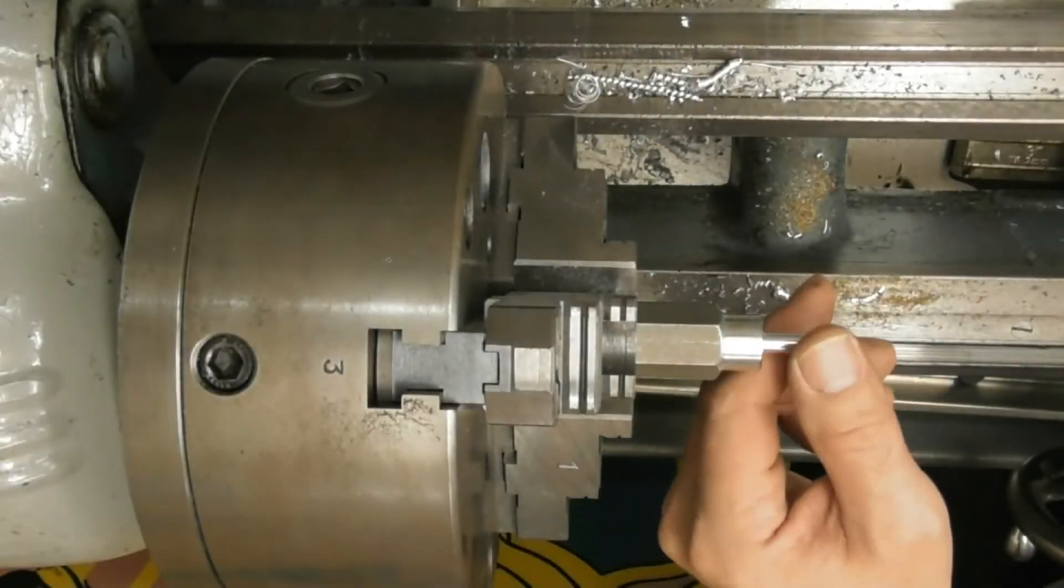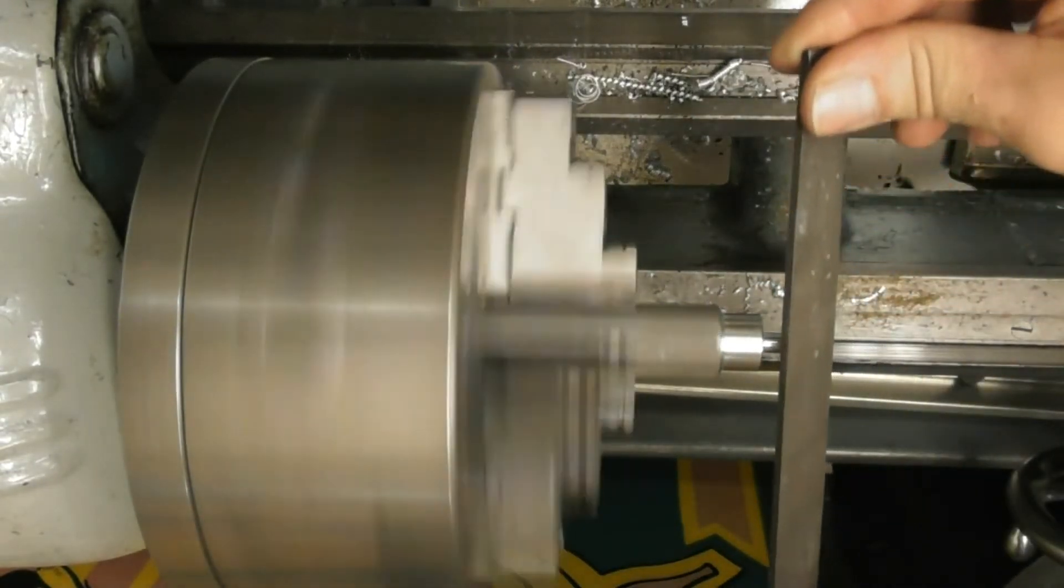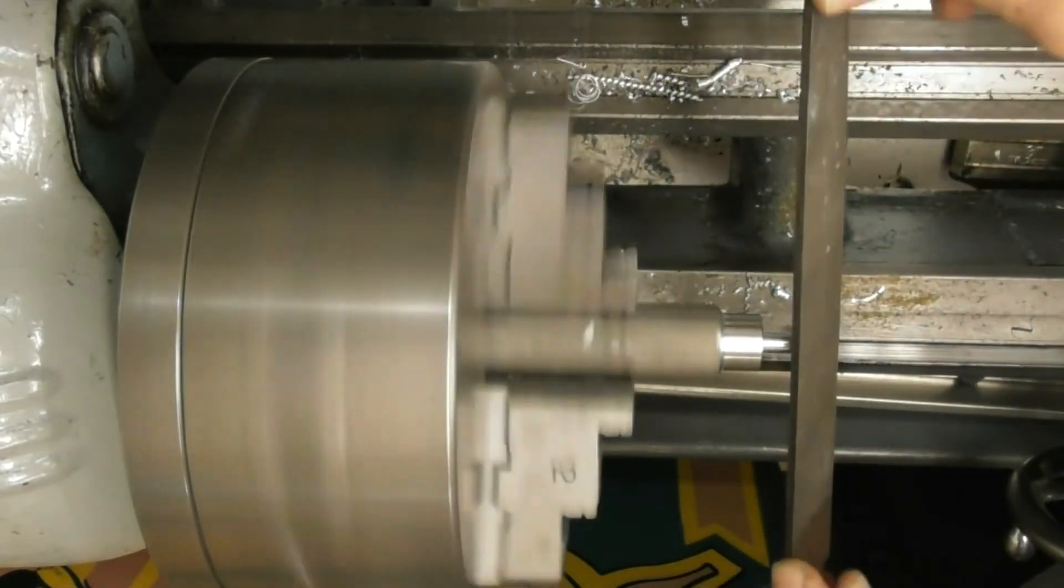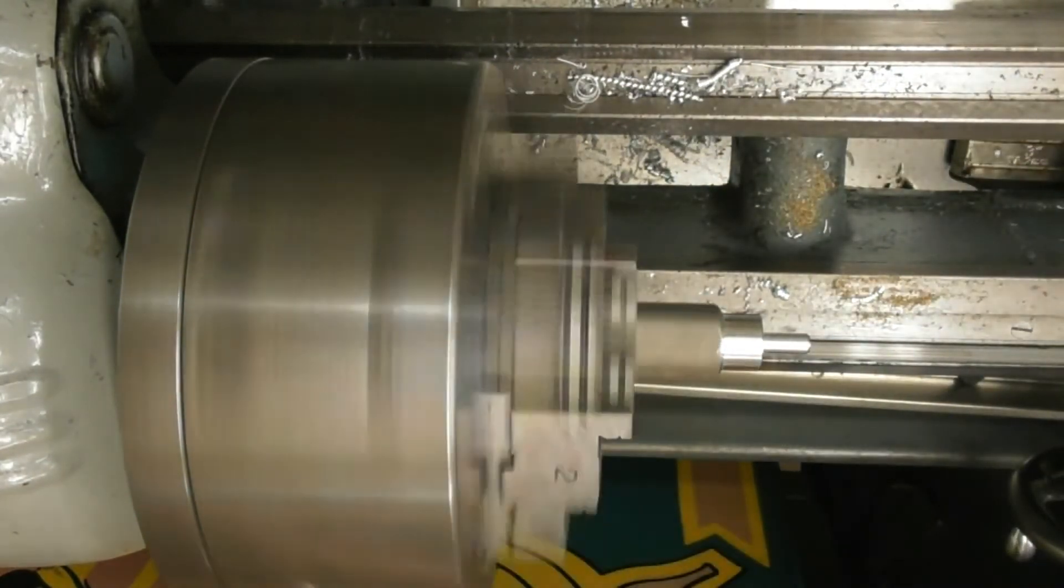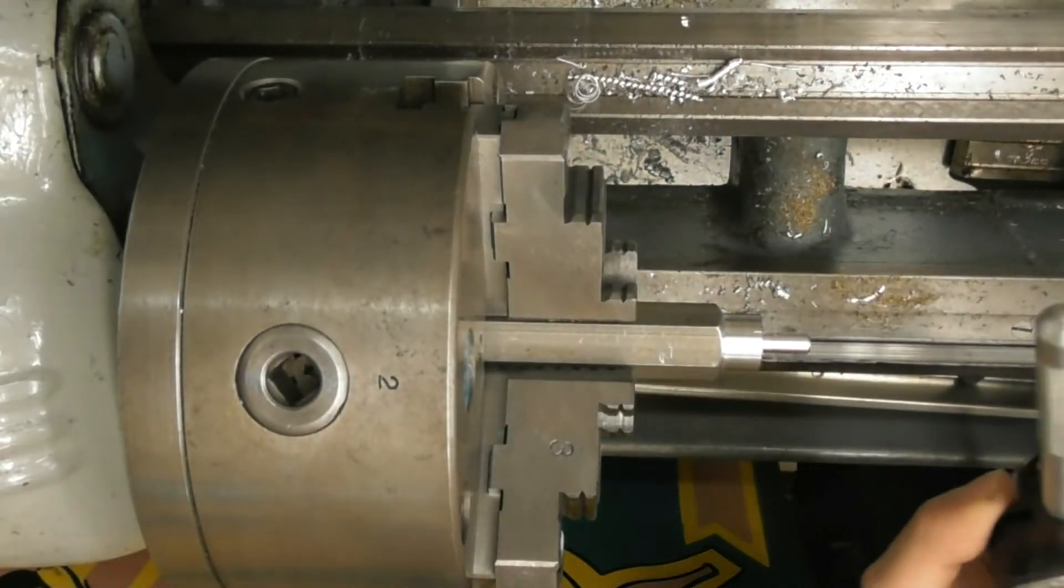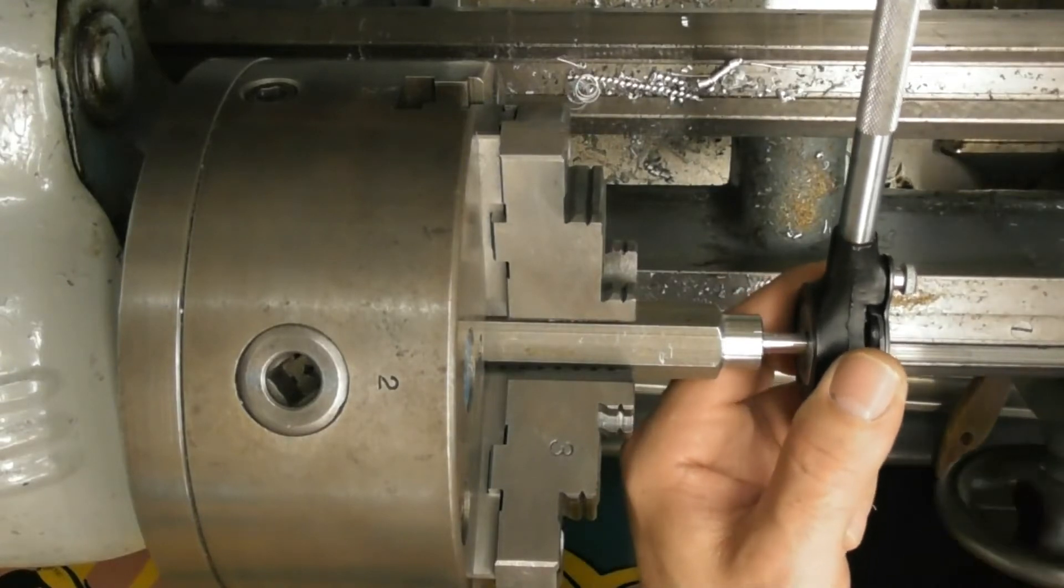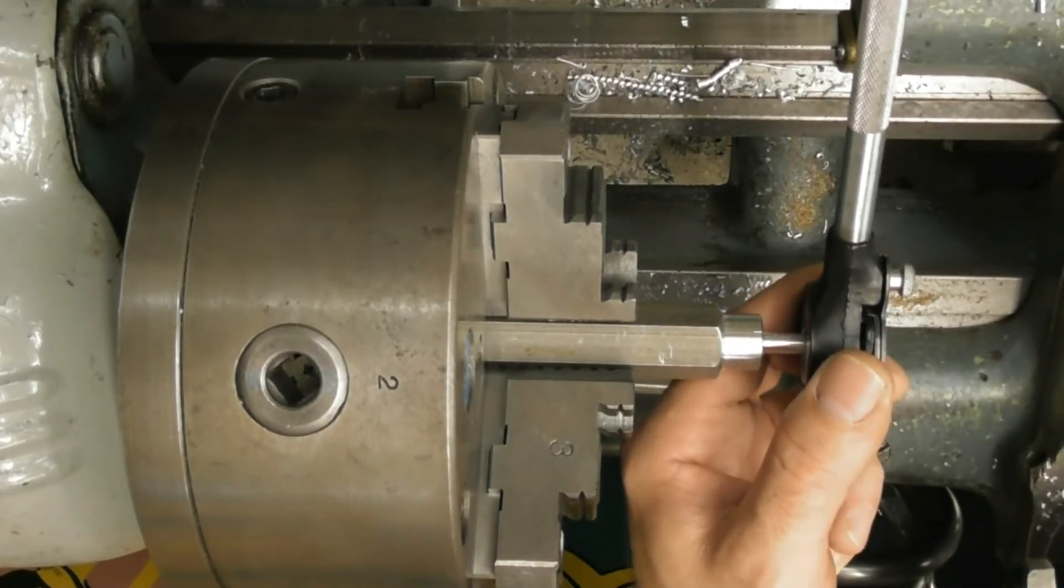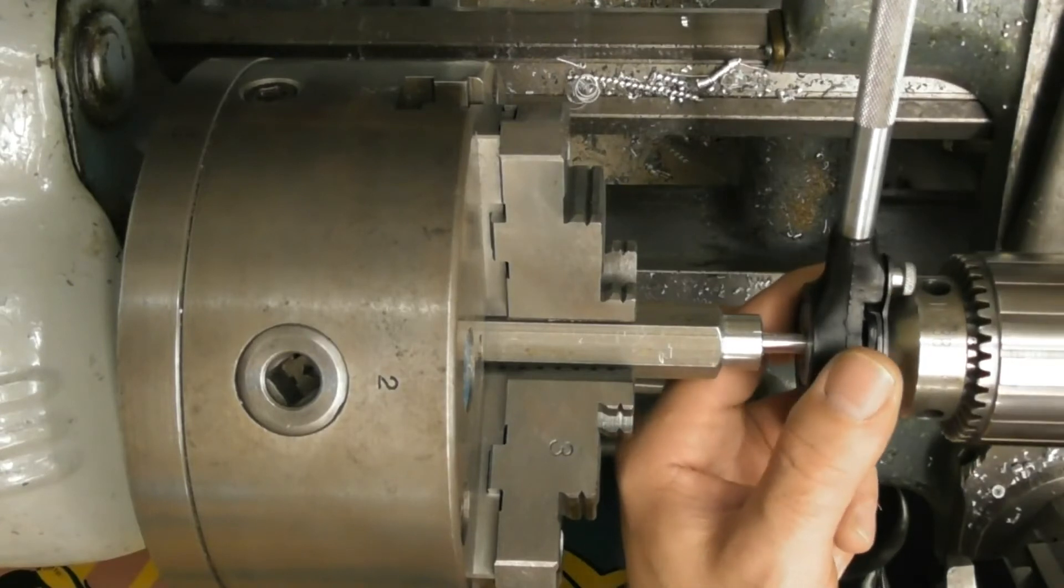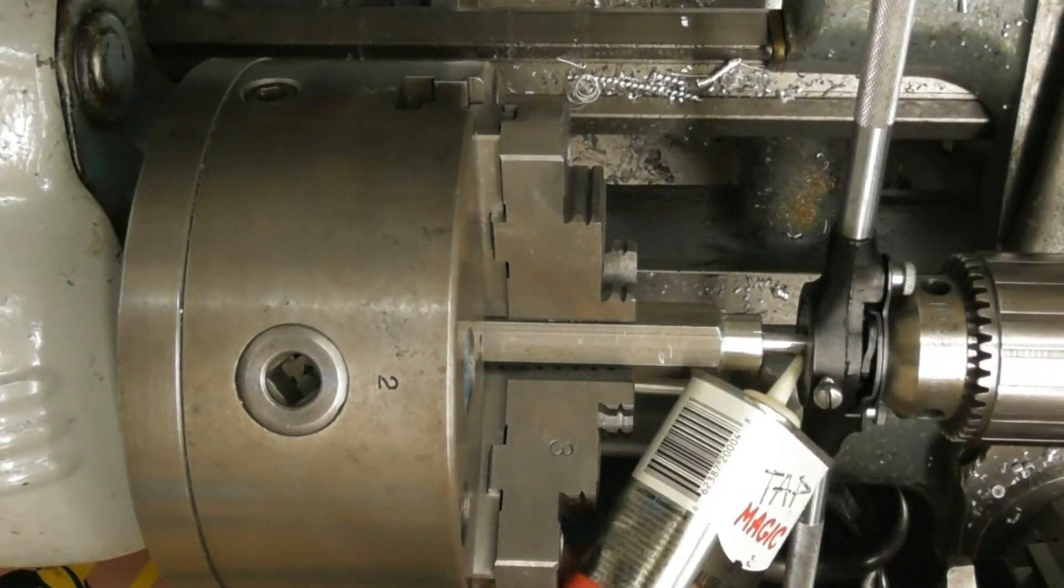All right, well everything is looking good. I'm going to take a file and chamfer this edge to give myself a lead angle for threading this. Looking good, looking good. I've got my quarter twenty die set up here. I'm going to bring my tail stock up with a chuck, just to get this started straight. A little bit more. There we go, lock my tail stock down. I'm going to use a bit of tap magic here and I'm just going to thread this by hand.